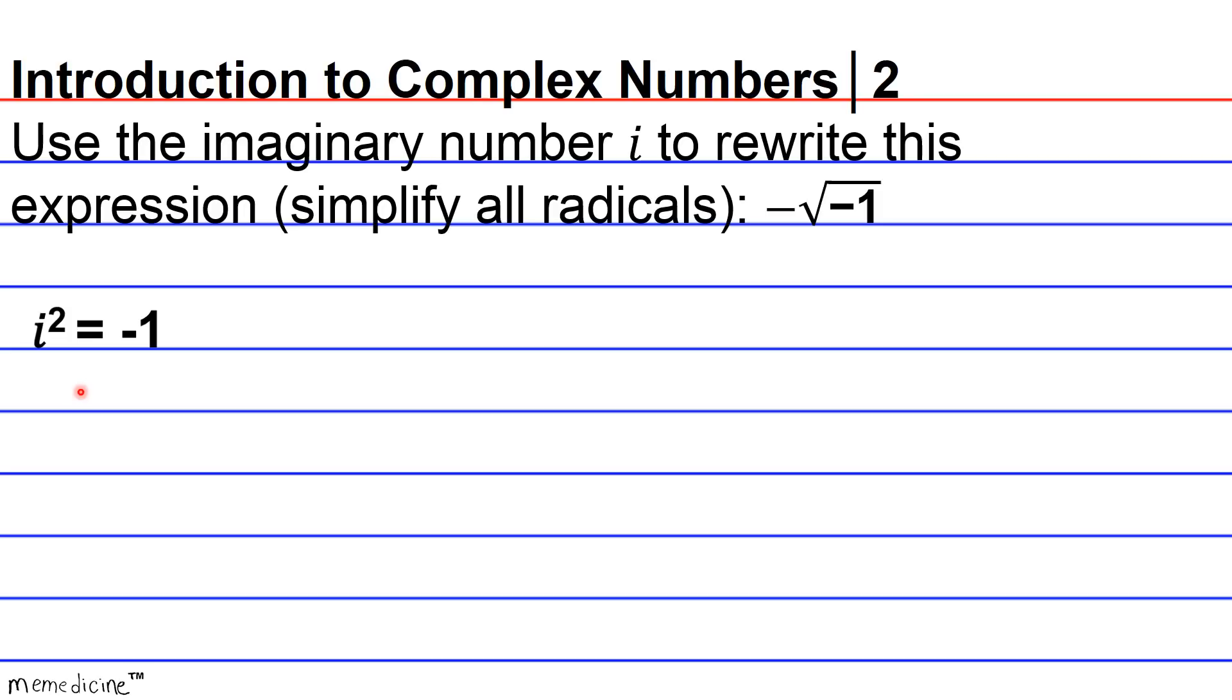Then the next thing that you need to understand is that for any negative number C, the square root of the negative number C is going to be i radical C, or i the square root of C.